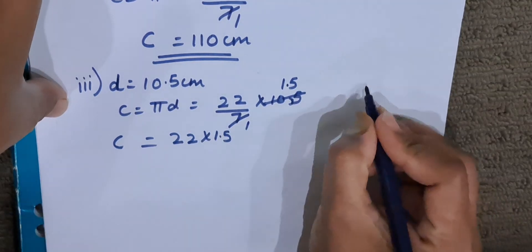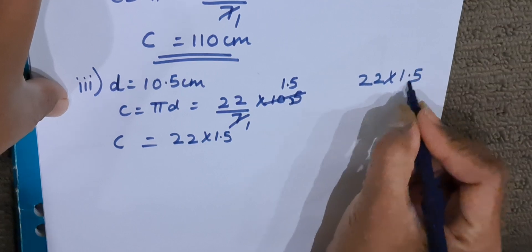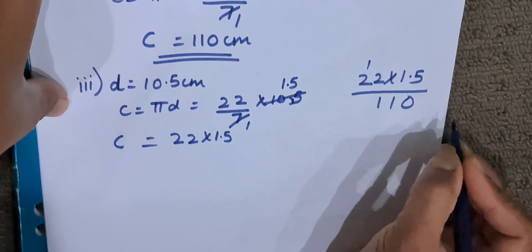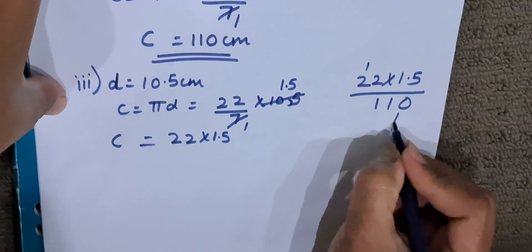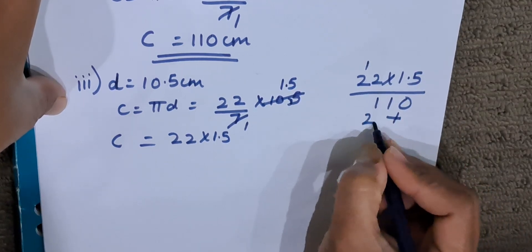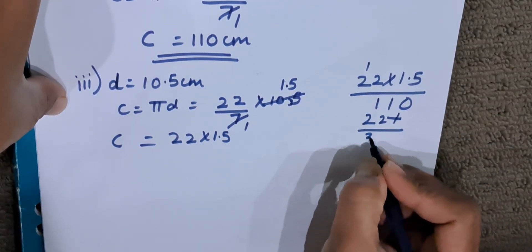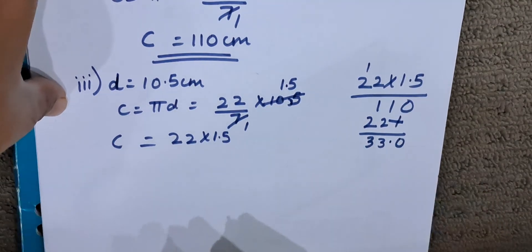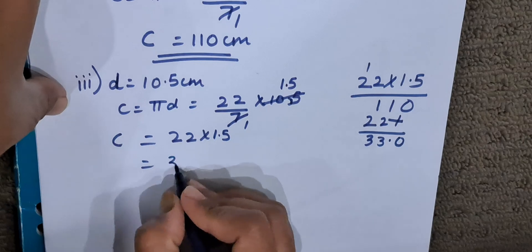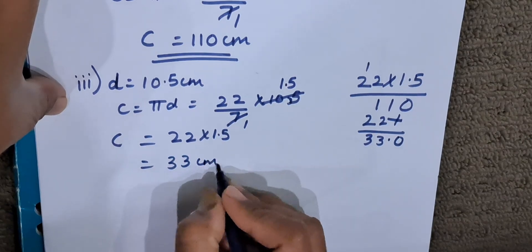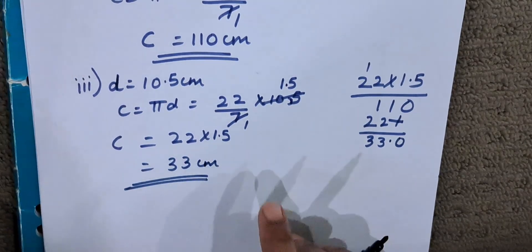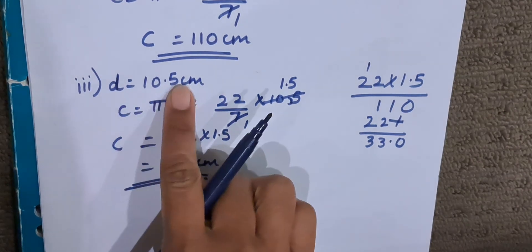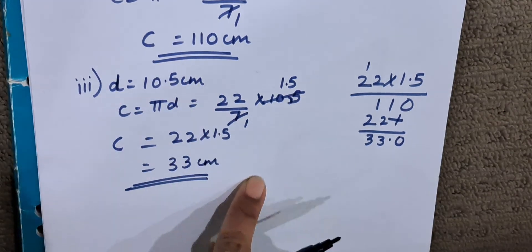Now we will multiply 22 and 1.5. We get 5 twos are 10, 5 twos are 10 — that is 110, plus 22 gives us 132, and placing the decimal point gives 33. So the circumference of the circle whose diameter is 10.5 centimeters is 33 centimeters.